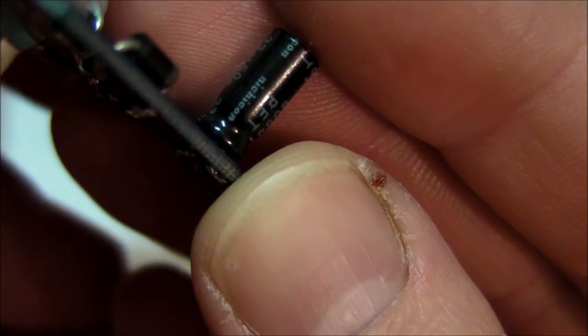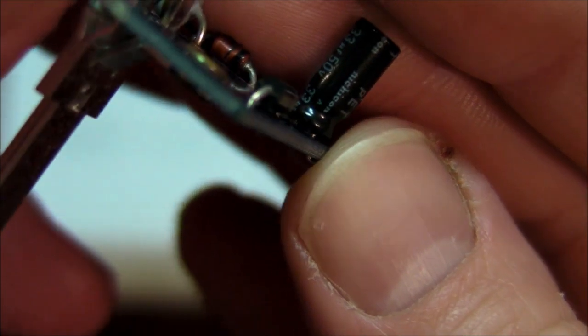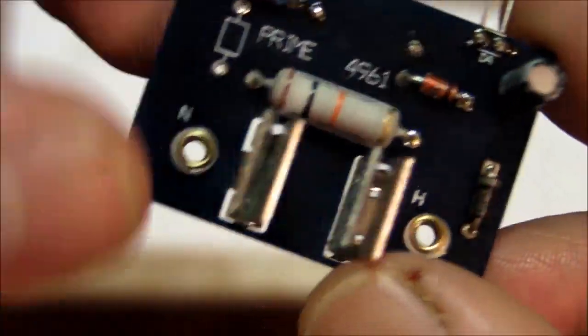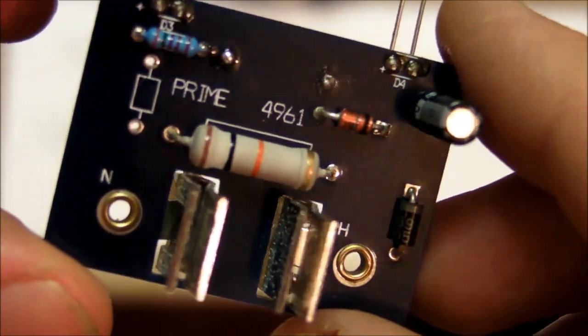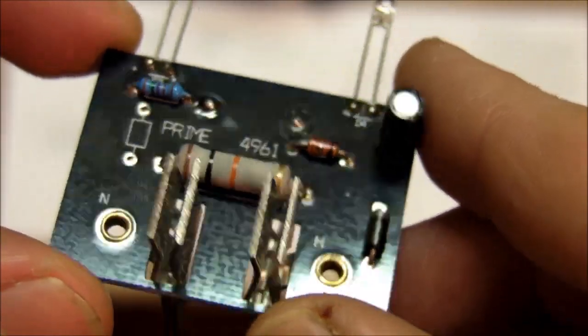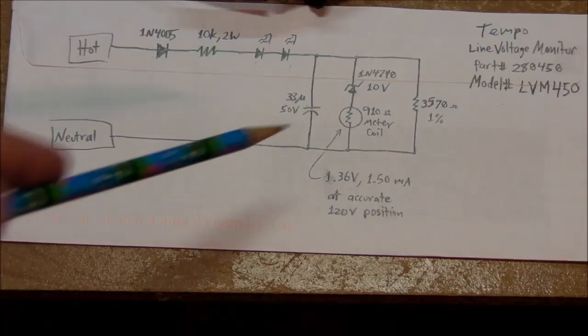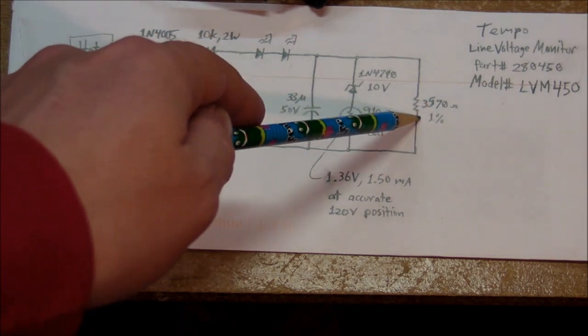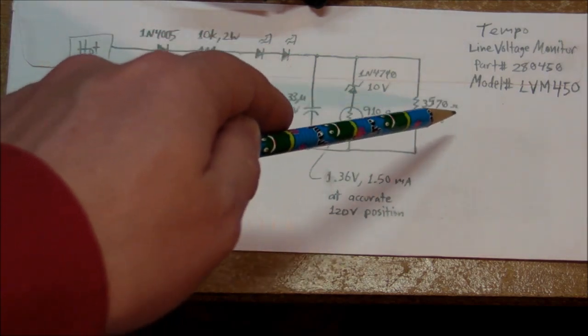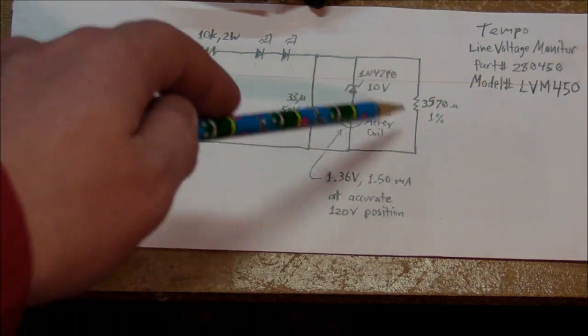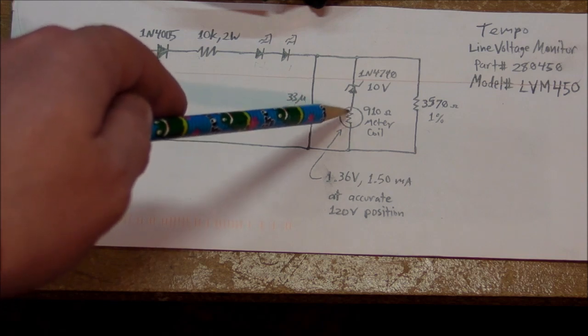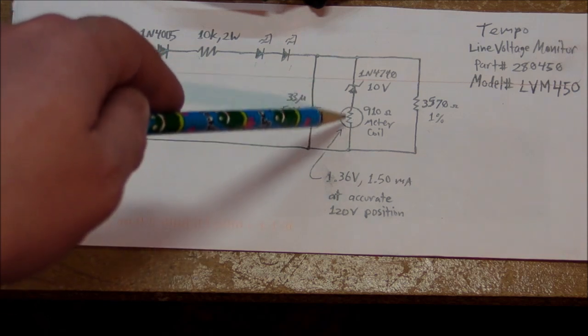It's actually a Nichicon capacitor. I was really surprised to see a good quality cap in here and likewise a good quality circuit board. It's just very bizarre to see this kind of good craftsmanship inside an ultimately shit product. Anyway, then we got the zener and the coil and another little resistor over here, 3570 ohm 1% tolerance resistor just to tune the scale to the proper settings so that this thing actually shows what you want it to show on the scale.